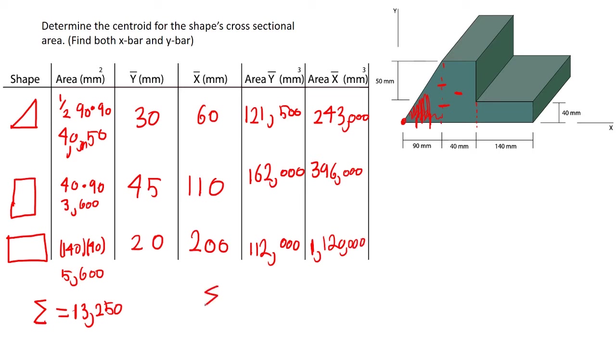So we want to sum the area times the y-bars up. And we want to sum the area times the x-bars up. So this is going to yield 395,500, that's millimeters cubed. Then over here we have 1,759,000 even. So now we simply use our equations and we're good to go.